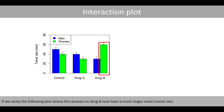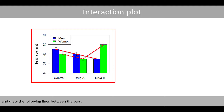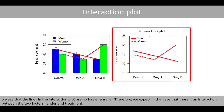Let's consider another example where the women on drug B now have a much larger mean tumor size. If we draw lines between the bars, we see that the lines in the interaction plot are no longer parallel. Therefore, we expect in this case that there is an interaction between the two factors, gender and treatment.